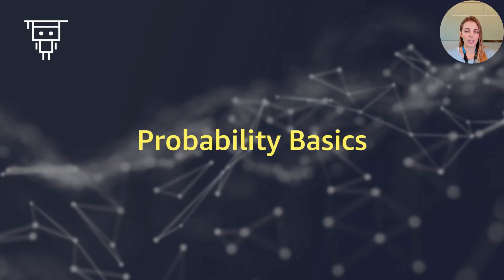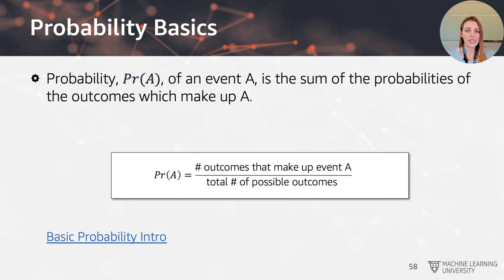To understand these criteria in more detail, we need a quick detour into probability basics. The probability PR of an event A is the sum of the probabilities of the outcomes that make up A — simplified, you total the number of outcomes that make up the event and divide by the total number of possible outcomes. Keep this equation in mind because we're going to use probability in just a moment.